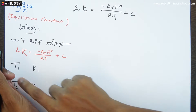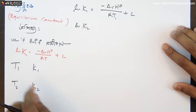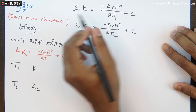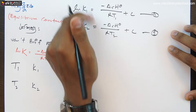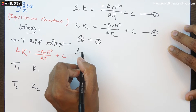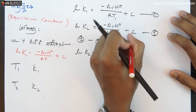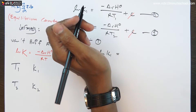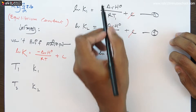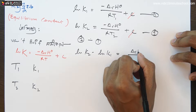...over R·T1 plus C. Note that here only temperature changes with the rate constant k; the other values remain constant. Similarly, if we put the second value, that is T2 into the equation, then we get: logarithm of k2 equals negative delta H over R·T2 plus C. Now if we consider both equations and subtract — that is, equation 2 minus equation 1...